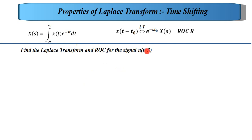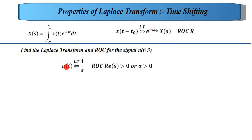The next question asks for the Laplace transform of u(t + 3), which is a time shifted step signal. For this, we use the Laplace transform of the step signal u(t), which is 1/s, as discussed in the previous lecture. The ROC is σ > 0. Now the given signal is u(t + 3), so we apply the time shifting property.